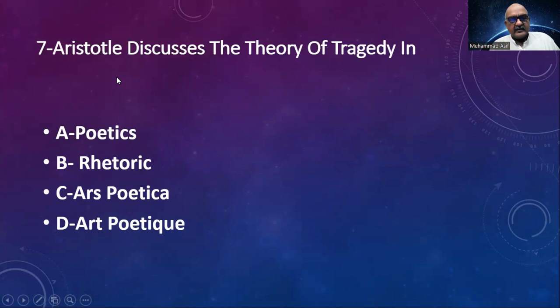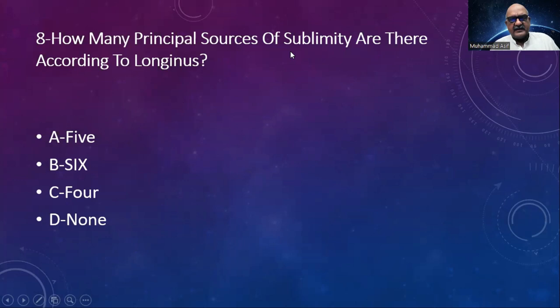Aristotle discusses the theory of tragedy in — Poetics, Rhetoric, Ars Poetica, Art Poetic? The answer is Poetics. How many principal sources of sublimity are there according to Longinus? Options are five, six, four, nine. The answer is five. Longinus is considered the first romantic critic, as he focused solely on imagination and creativity and did not believe in craft.